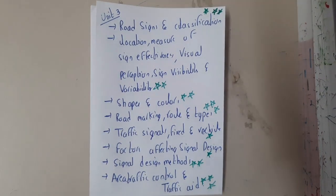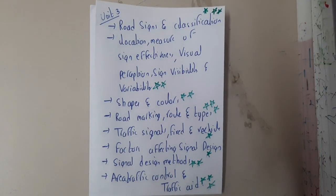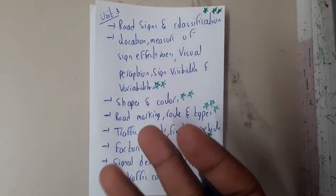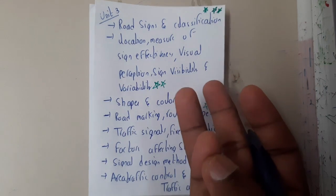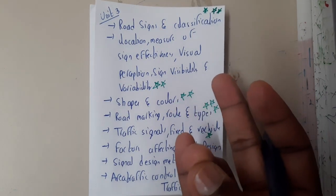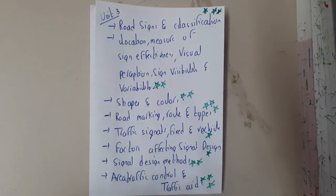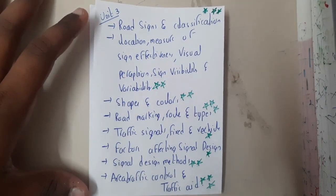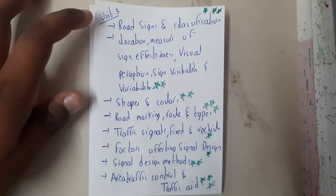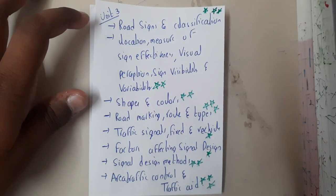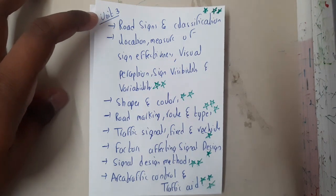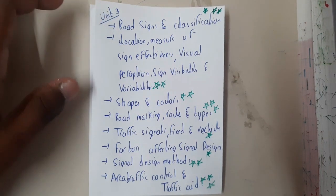Hello guys, this is the review video of Unit 3 of Road Safety Engineering. In this unit we have many topics — majorly three different topics: road signs, road markings, and traffic signals. These are the concepts which are important, so please make sure that you are perfect with the classification of road signs.